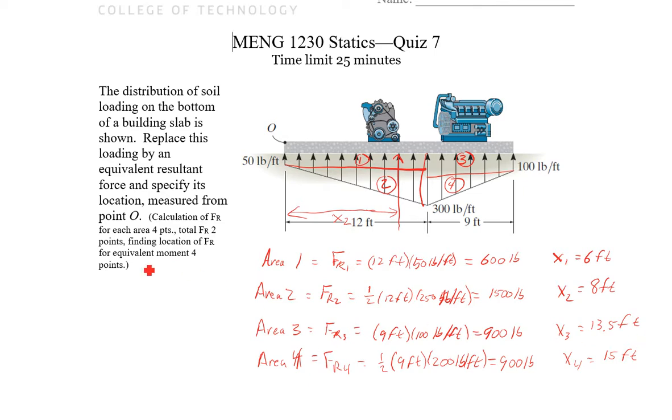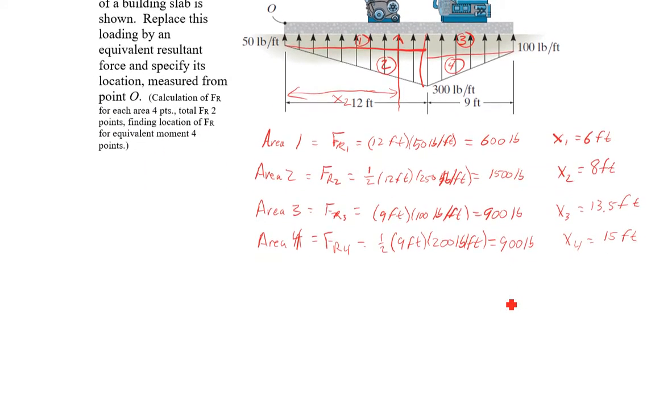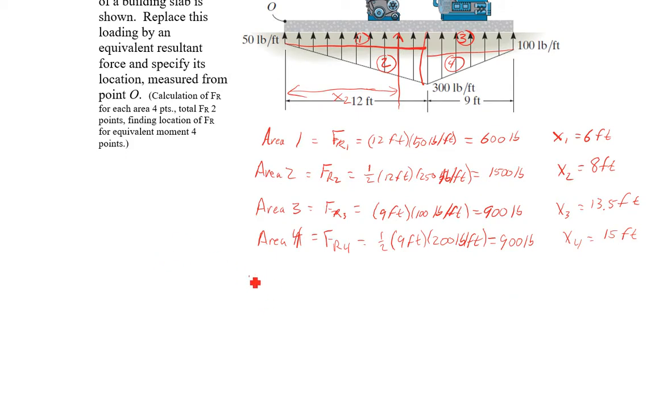All right. So we found FR for each area. Total FR. It's going to be FR1 plus FR2 plus FR3 plus FR4. So that equals 600 plus 1500 plus 900 plus 900. So 2,100, excuse me, 3,900. So FR, 3,900 pounds.